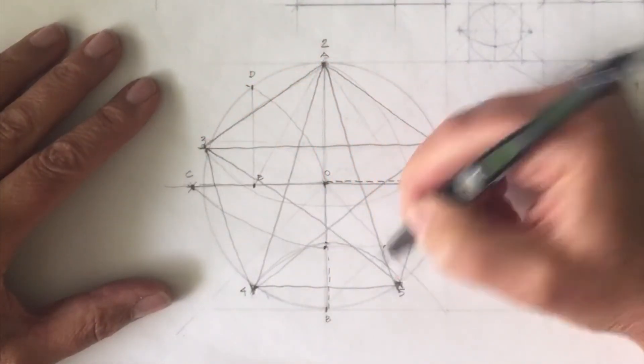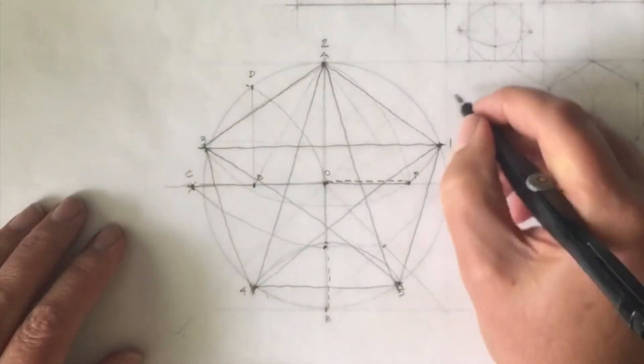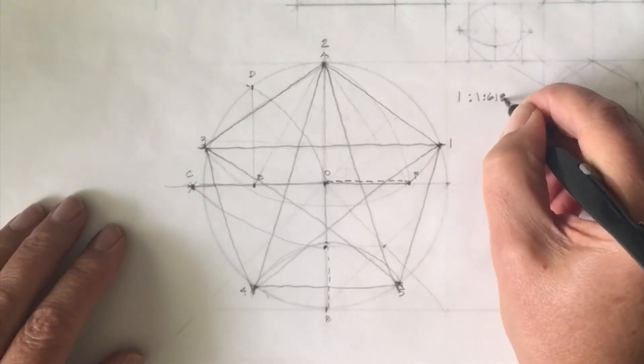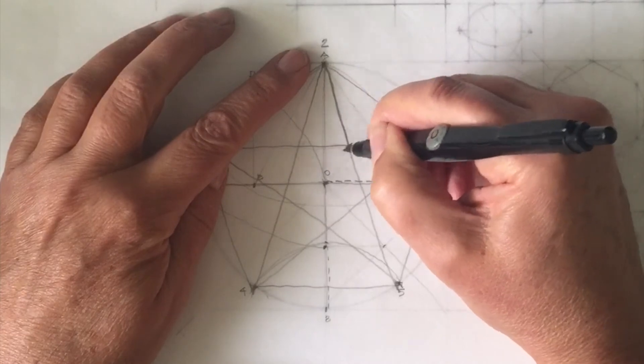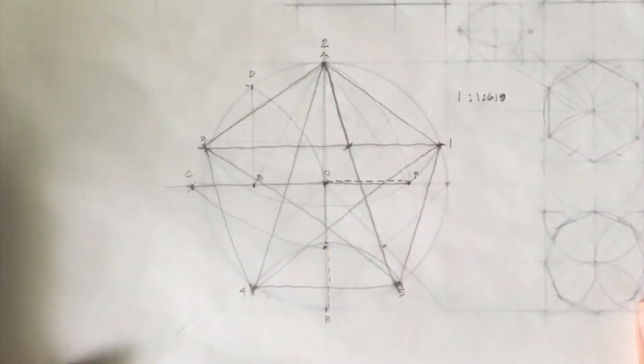And as we saw in Donald Duck Math Magic Land our old proportions of 1 to 1.618 or .618 is found between a point from here and a point like here. So I'm just going to draft it for you.